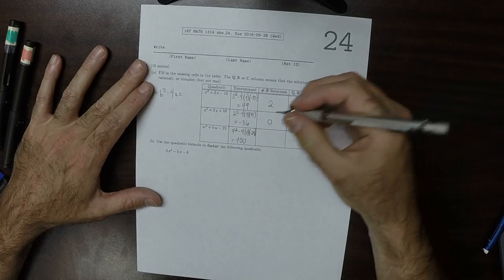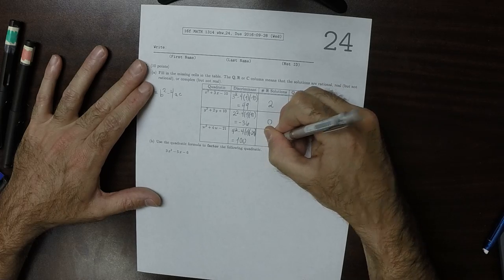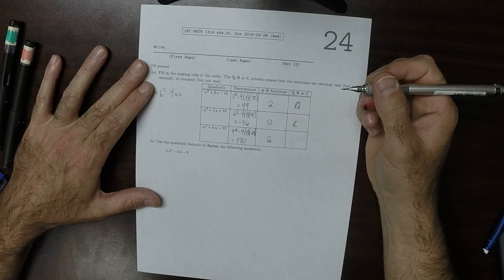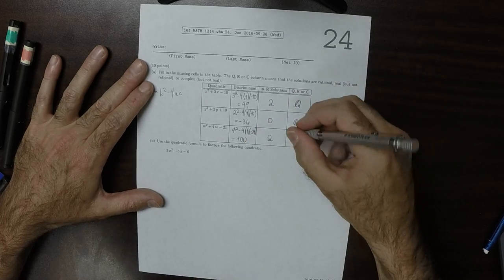And in this case, we'll have two real solutions. And because 100 has a square root, they'll both be rational.